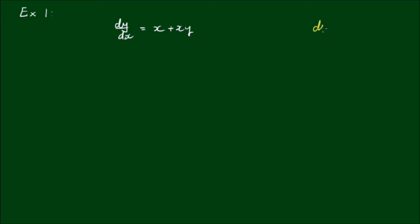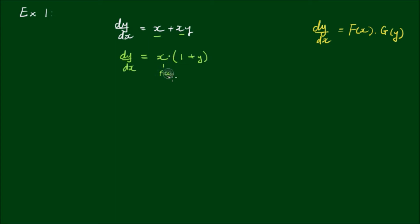Remember, we want to write the equation in the form of dy/dx equals some function of x times some function of y. In this example we can factor out the x's — taking x out of the two terms gives us x times (1 plus y). So we have successfully separated the variables. Here x is a function of x, and (1 plus y) is a function of y. We can now rearrange to get all the y's on the left: dy on (1 plus y), and all the x's on the right: x dx.